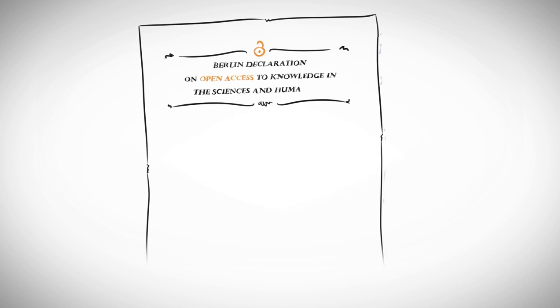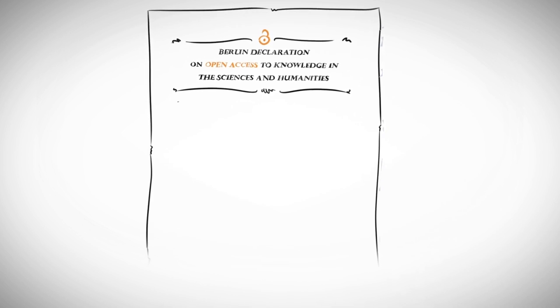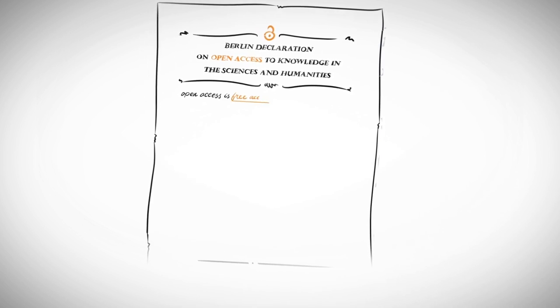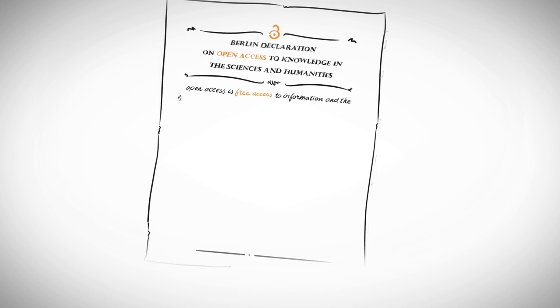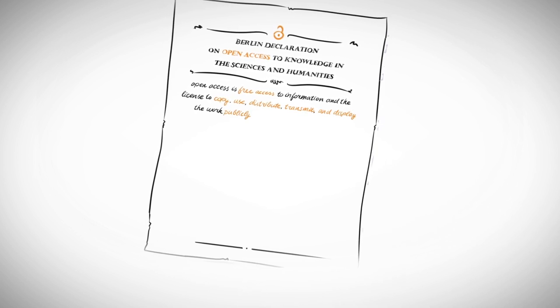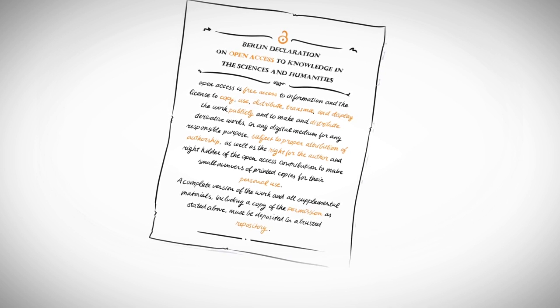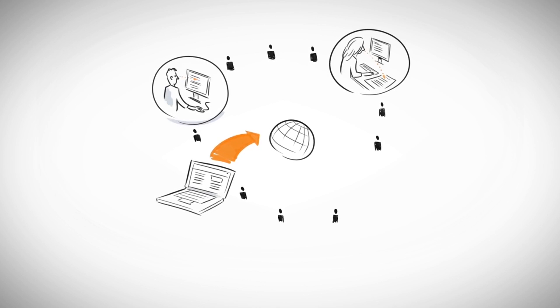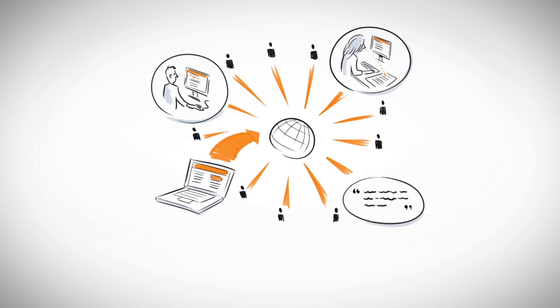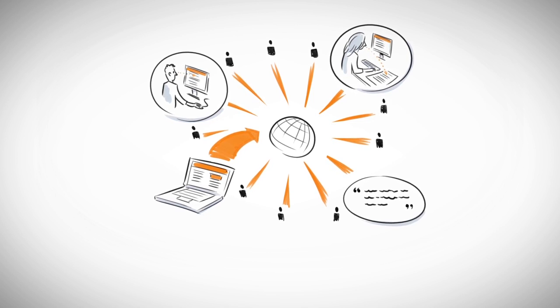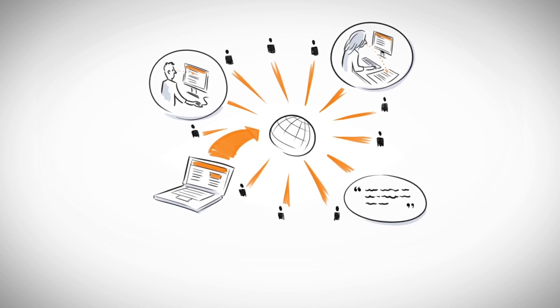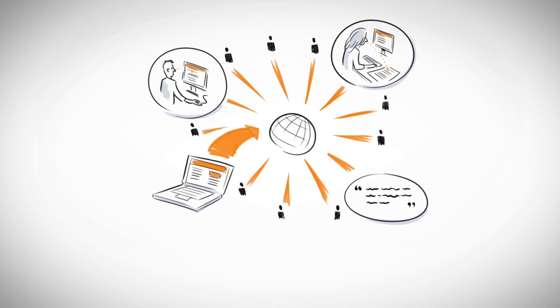The Berlin Declaration on Open Access to Knowledge in the Sciences and Humanities states that open access is free access to information and the license to copy. That is a mouthful. Let's break it down. Open access means the creators place their work on the internet for public use free of charge and free of most copyright barriers. Anyone can read it, cite it, and reuse it.